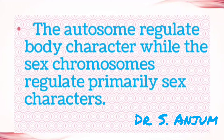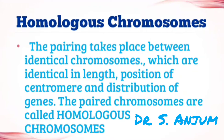The autosomes regulate body characters, while the sex chromosomes regulate primarily the sex characters. The pairing of chromatin takes place between identical chromosomes which are identical in length, position of centromere, and distribution of genes. These paired chromosomes are called homologous chromosomes.